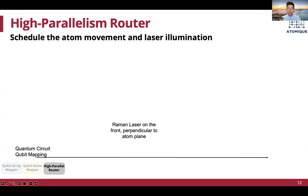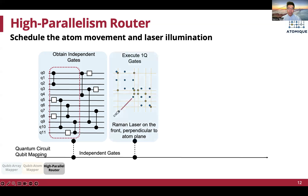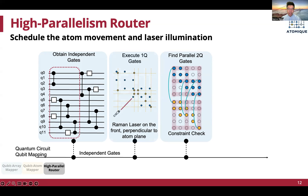In the third step, the high parallelism router schedules atom movements and laser illuminations according to the quantum circuit. The process runs iteratively. In each iteration, algorithmically independent gates are selected in the front layer. Then, a global laser perpendicular to the atom plane is illuminated to perform one-qubit gates. For two-qubit gates in each iteration, we can maximally perform four two-qubit gates in parallel, but that may violate hardware constraints. Therefore, we perform hardware constraint checking to find a valid subset of algorithmically independent two-qubit gates.